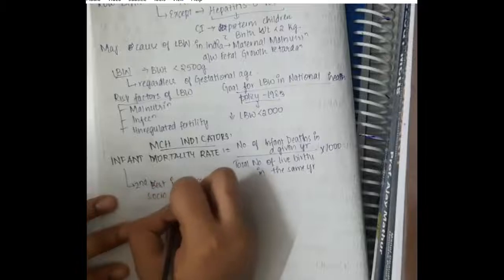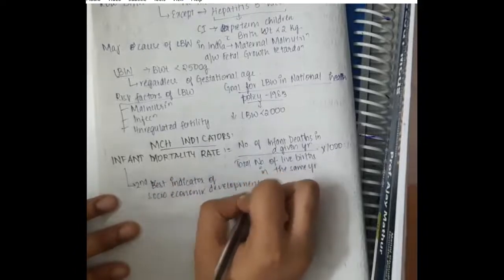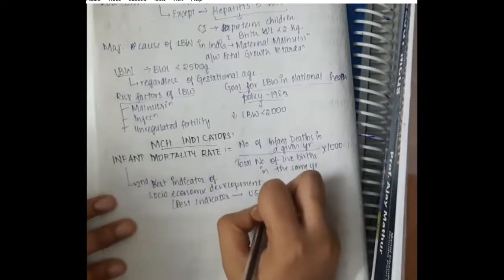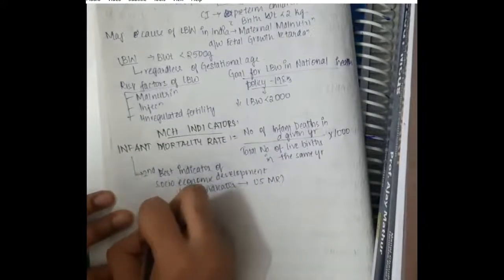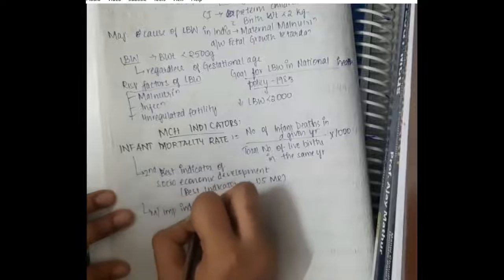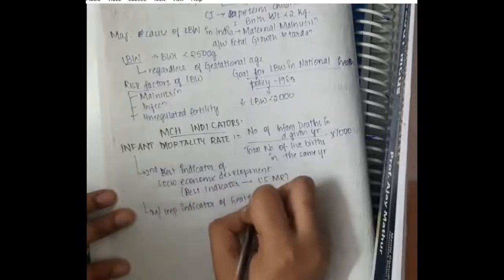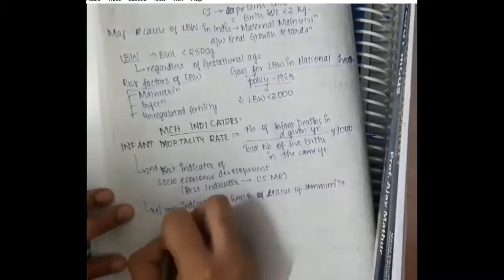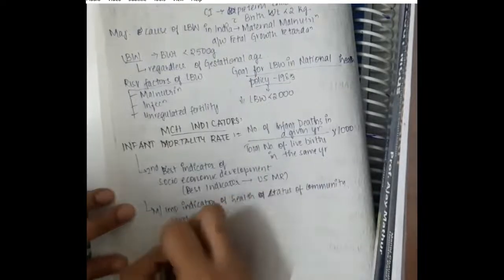Infant mortality rate is the second best indicator of socio-economic development. But the best indicator of socio-economic development is under 5 mortality rate. Infant mortality rate is the most important indicator of health status of community level of living.